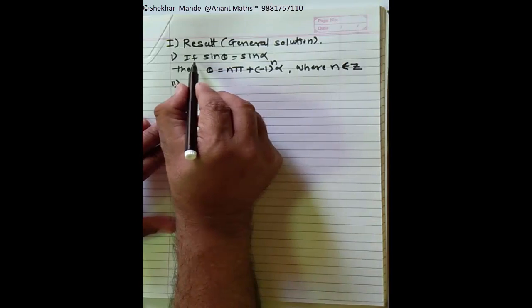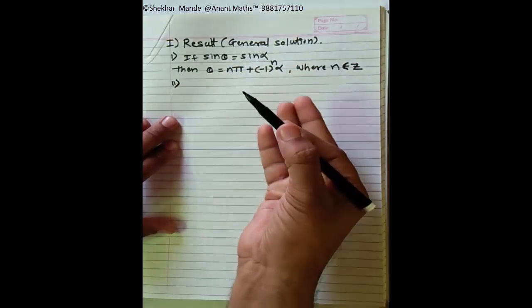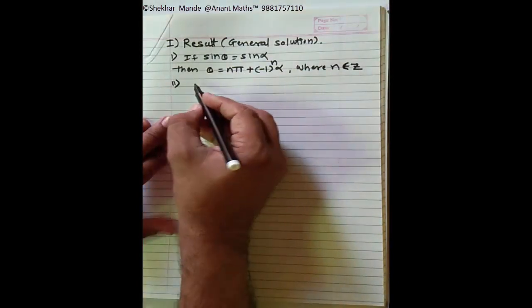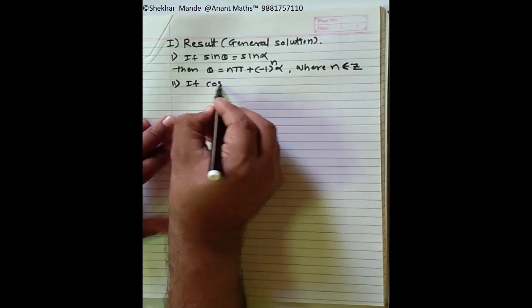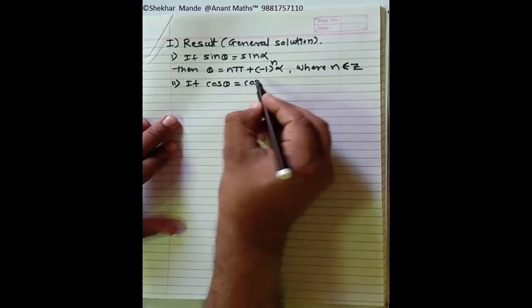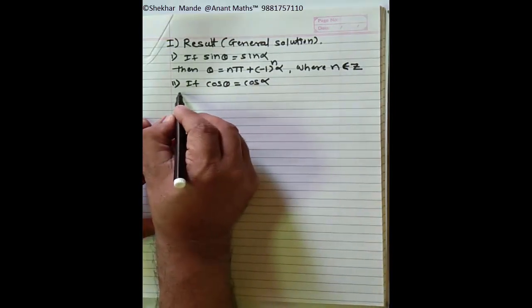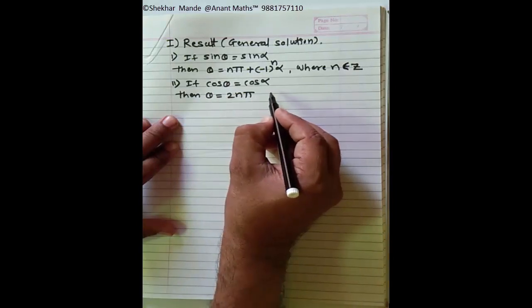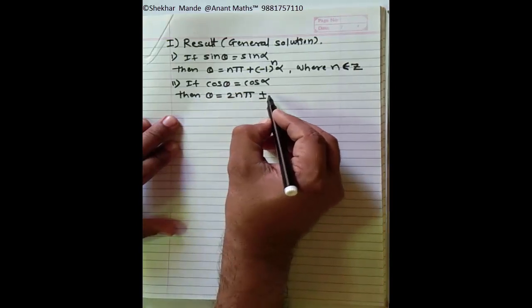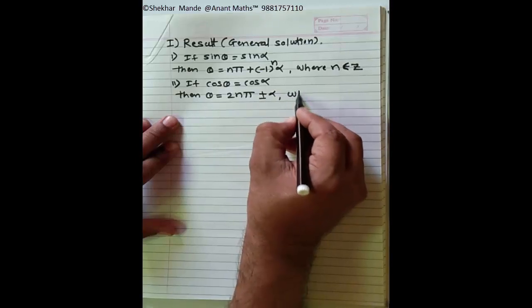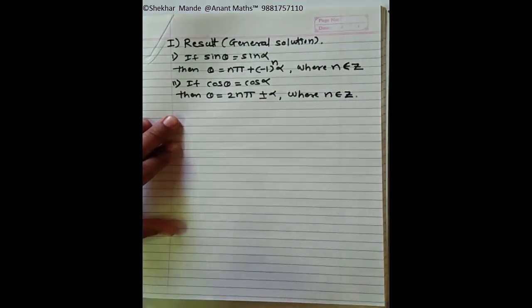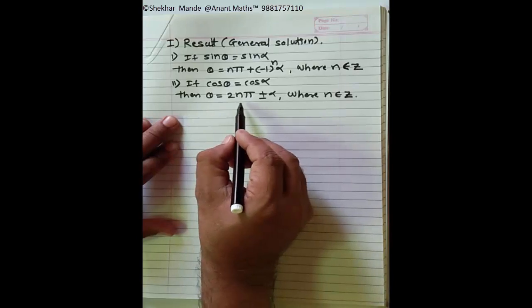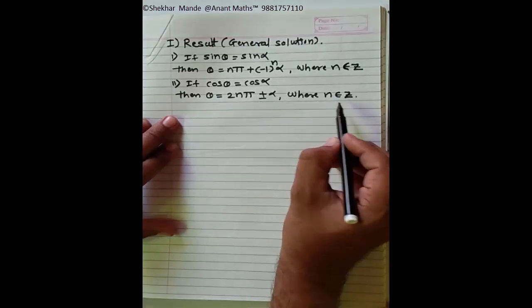Second result: if cos θ = cos α, then θ = 2nπ ± α, where n belongs to Z. Third: if tan θ = tan α, then θ = 2nπ ± α, where n belongs to Z.